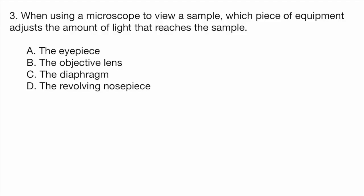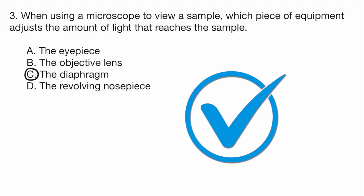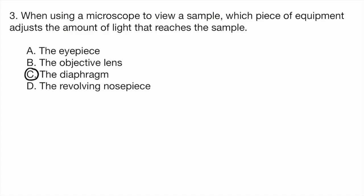The correct answer is letter C. Even if we didn't know that, we could work our way to that answer through process of elimination. Option A, the eyepiece, is simply the piece where we look into the microscope. Option B, the objective lens, is the portion of the microscope that magnifies the image. Option D, the revolving nosepiece, is the part that switches out the lens magnification — usually there are about three lenses on a microscope. So even if we didn't know it was the diaphragm, process of elimination would lead us there.